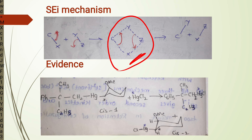This transition state rapidly cleaves to form products. In this mechanism also, the product is formed with retention of configuration, because this type of internal assistance is not possible in a backside attack. So, the product forms with retention of configuration.